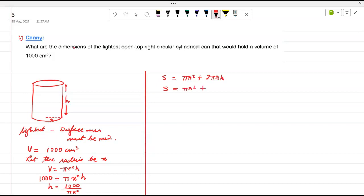So pi r square plus 2 pi r, and what is my h? Thousand over pi x square. Instead of r I put x because the radius is x. Correct.